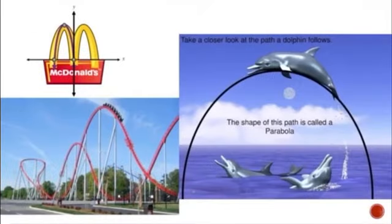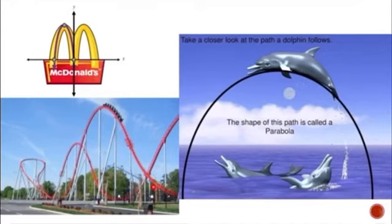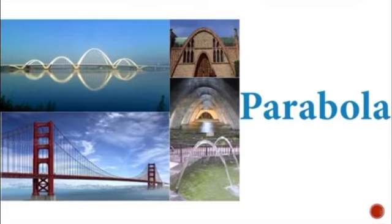These are some real-life examples of a parabola. In the McDonald's symbol you can see two parabolas. The path of a dolphin is also in the shape of a parabola. Even a bridge and the dish we use are also in the shape of a parabola.